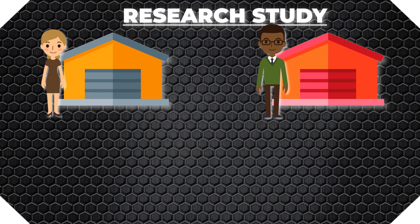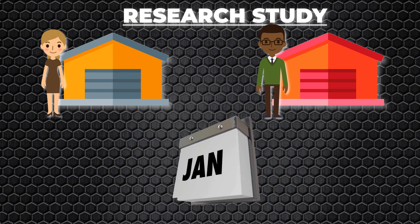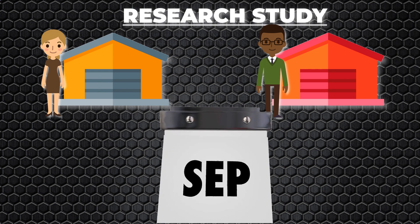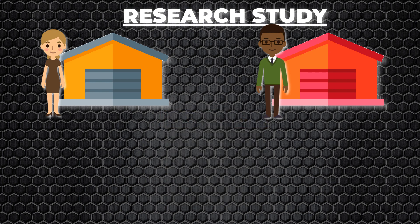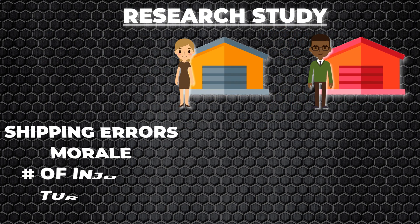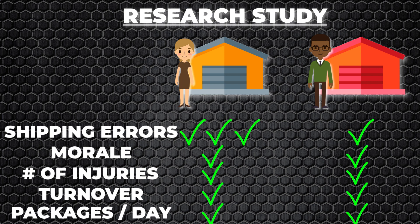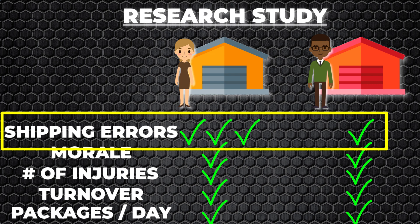Quick aside: yes, I know this isn't a great study because a thousand things could differ across warehouses, but for the sake of this example, let's assume that's not an issue. The research consultant suggests that Sue and Bill run their warehouses however they like for a few months, and then report back to leadership. A few months go by, and the consultants look to see if the two warehouses differ on these five metrics. What they find is that Sue's strict approach results in slightly fewer shipping errors and not much else. They run a statistical test and find that this difference is statistically significant at the standard 0.05 level.